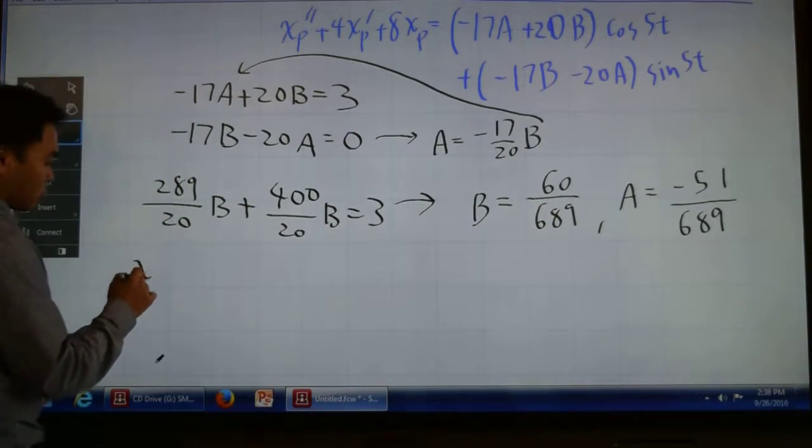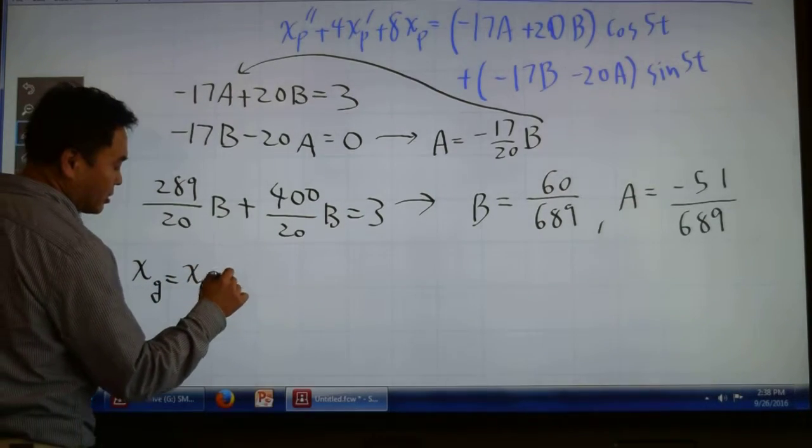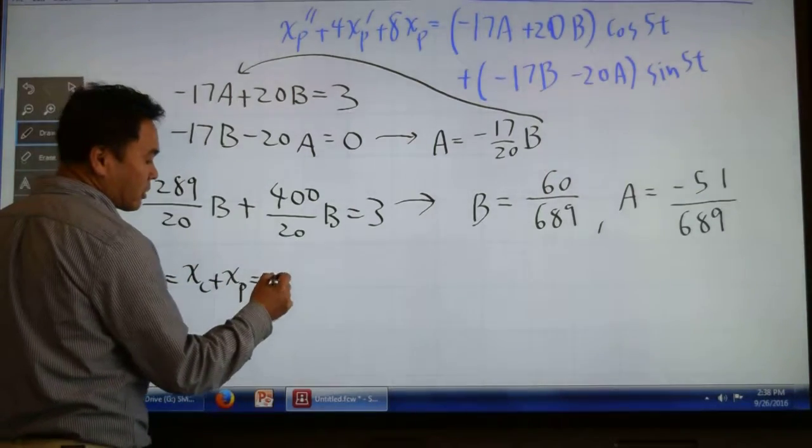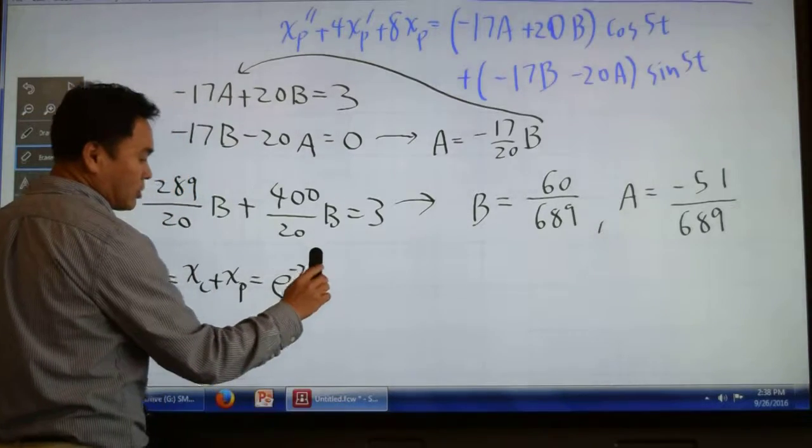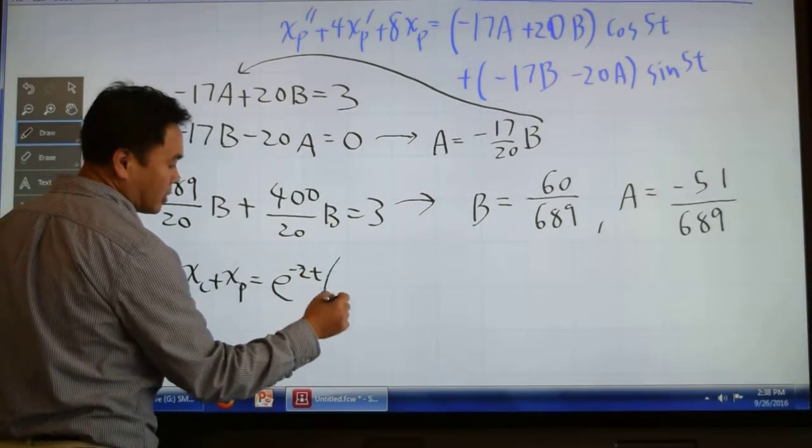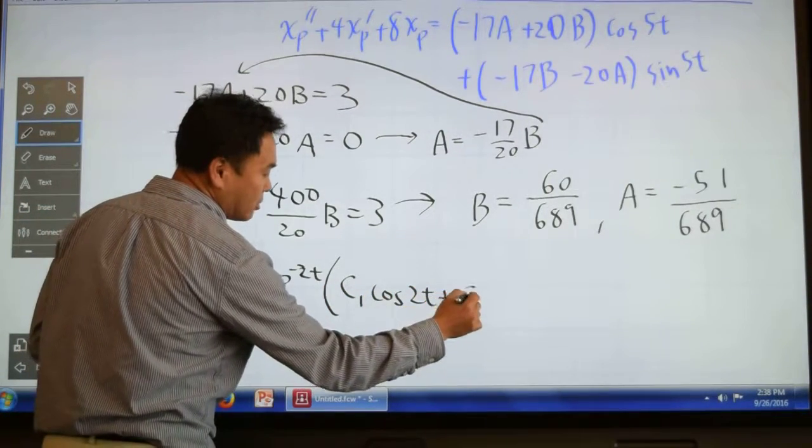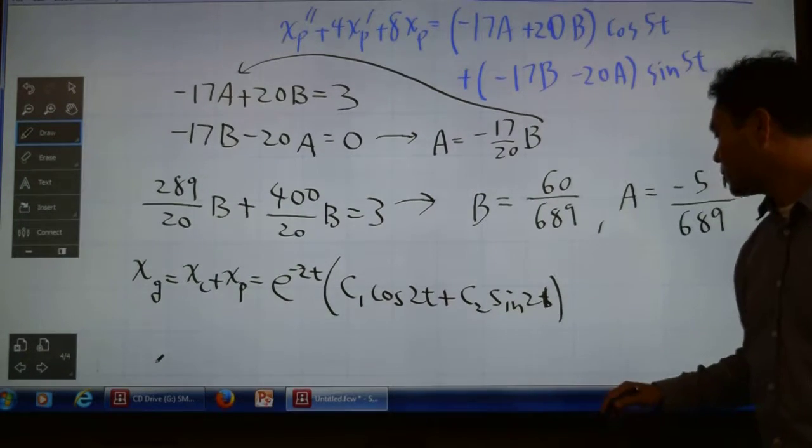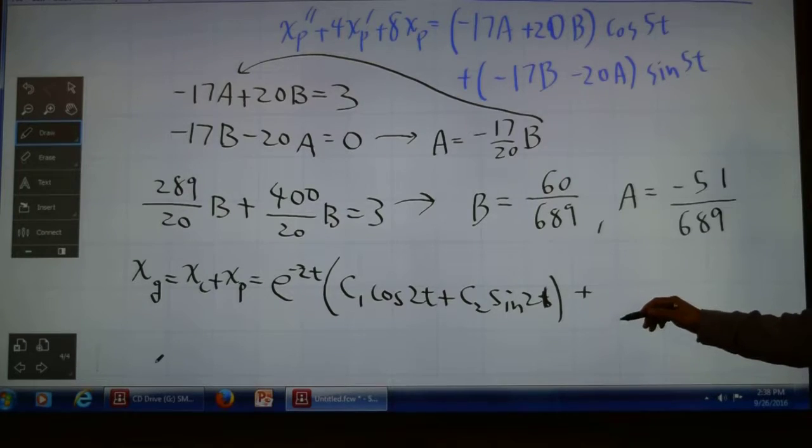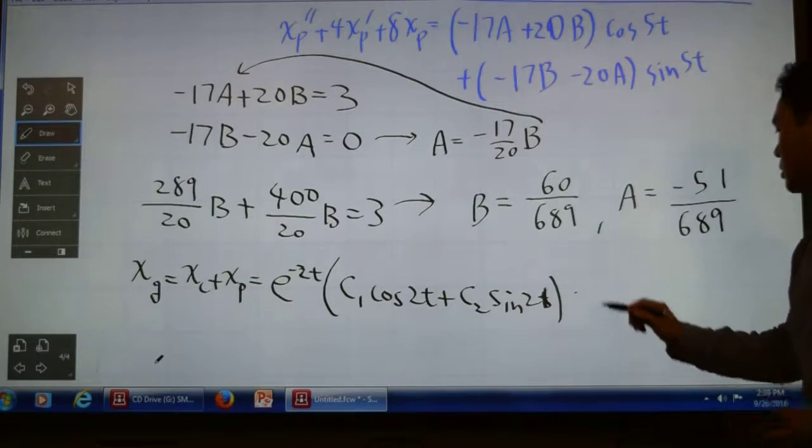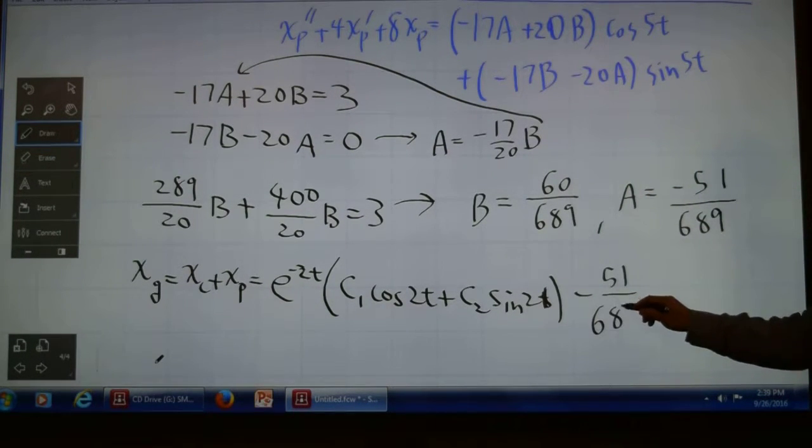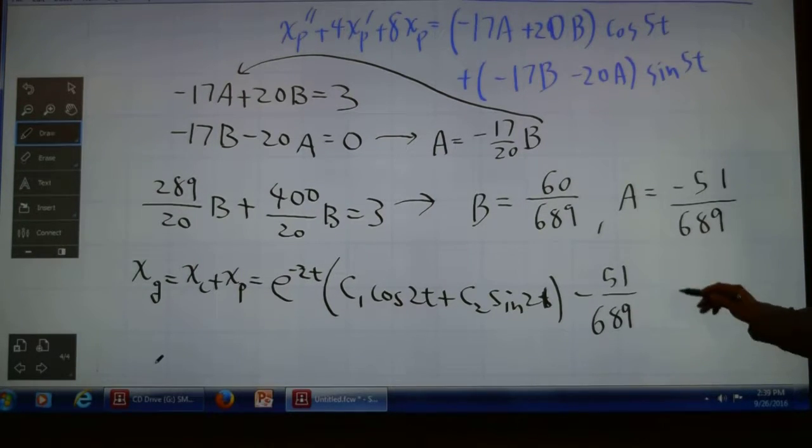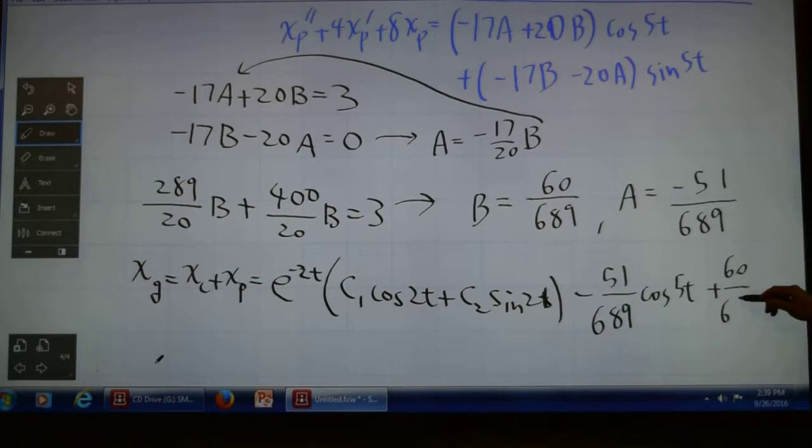Therefore, the general solution x_g = x_c + x_p = e^(-2t)[c1·cos(2t) + c2·sin(2t)] - (51/689)cos(5t) + (60/689)sin(5t). That's the general solution.